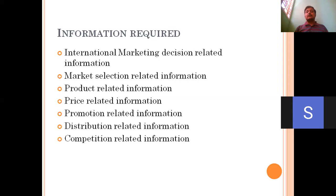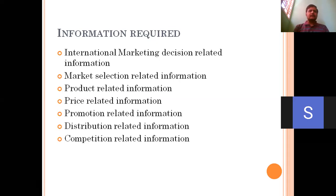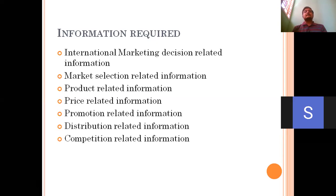International marketing decision-related information needs to be gathered. The second thing is market selection. If my product is a refrigerator, shall I select a district-level place as my marketplace? That is fine. But if you would like to make your agency available in a rural area, that is a failure task. Some brands can only sell in a few cities.